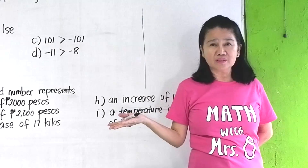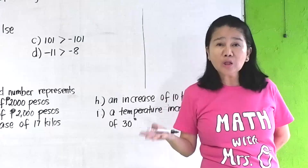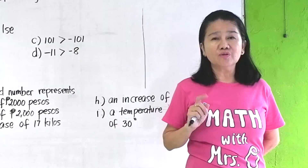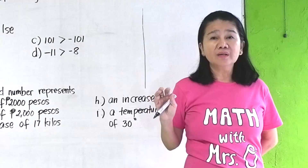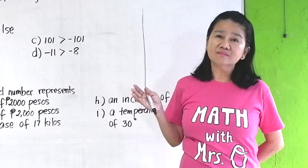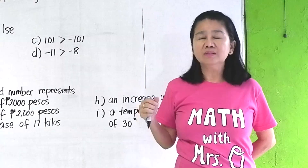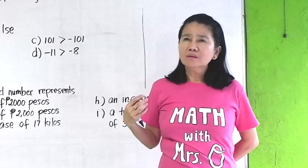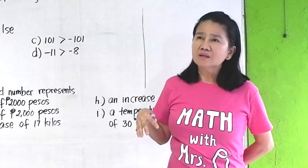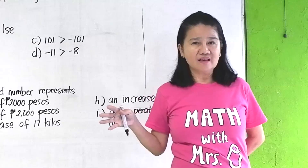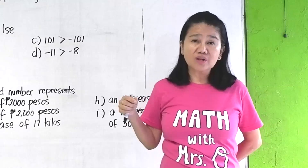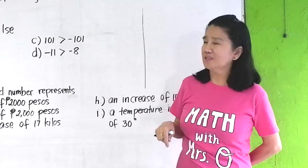Why are there negative numbers? Because there are things in real life — like weight loss. If you have a loss of ten kilos, you represent that as negative ten. We also have a decrease in temperature — if there's a decrease of two degrees, that's represented by negative two. Weight gain is positive. And debts (D-E-B-T-S) are negative numbers — like a loss of $2,000 or $20,000.